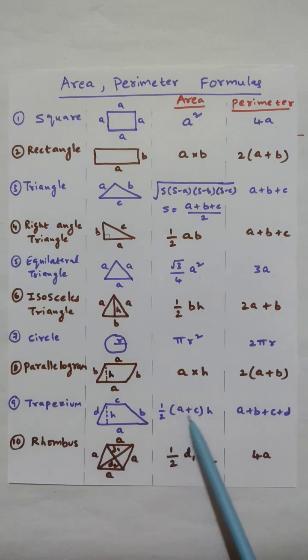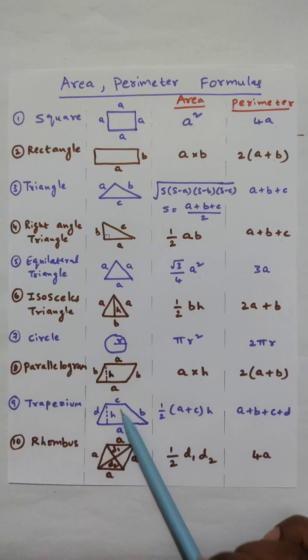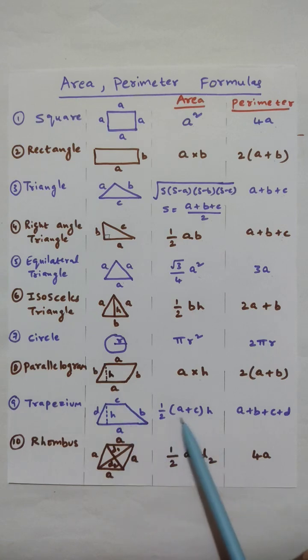Area is half into sum of the sides which are parallel in length, that is half into A plus C because these two are parallel to each other. Half into A plus C into height, that is distance between the two parallel sides. Half into A plus C into H. Perimeter is A plus B plus C plus D.